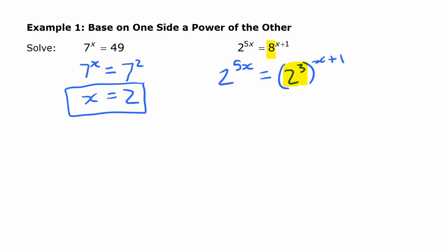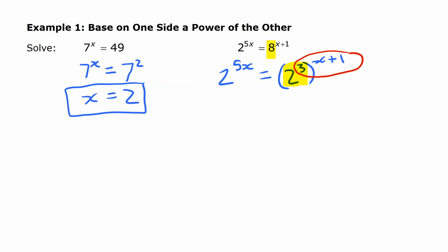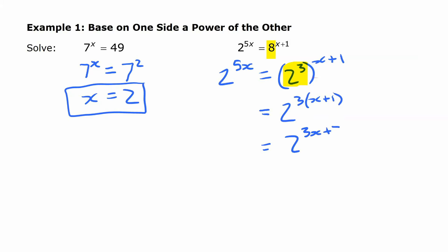Now that we've written it as expressions with the same base, we can simplify using exponent rules. If you have a power of a power, you multiply those two exponents. So the expression on the right becomes 2 to the 3 times (x plus 1), or in other words, 2 to the 3x plus 3. It's important to realize that this is a binomial in the exponent, so both terms must be multiplied by 3. A common mistake is forgetting to multiply that second term by 3. On the other side, we still have 2 to the 5x. Since the bases are the same, the exponents must also be the same, so we equate them.